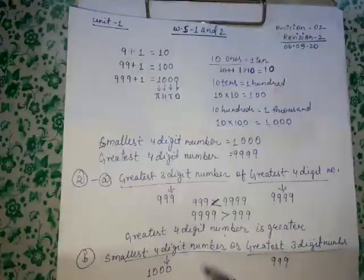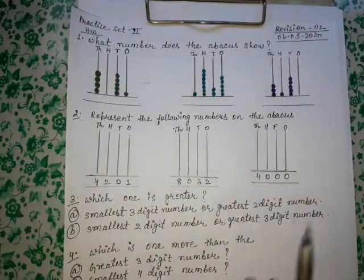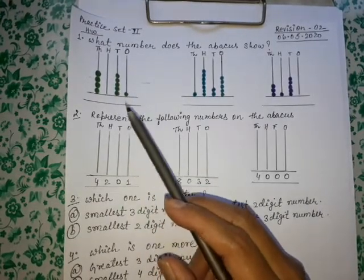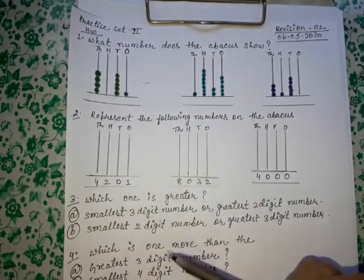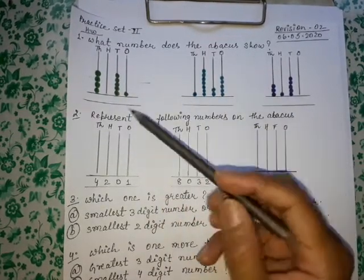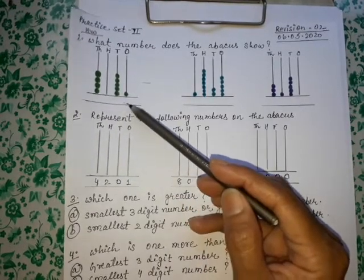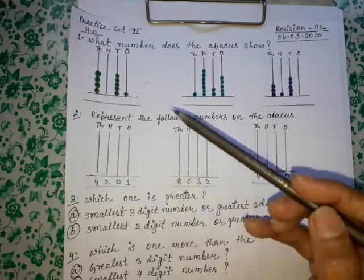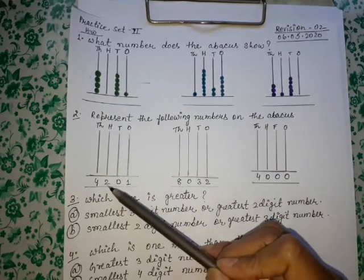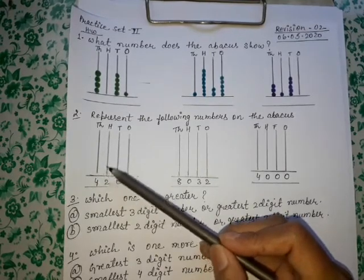After revising worksheet 1 and worksheet 2 of unit 1, you have to solve the practice set. In question 1, count the circles on the abacus and write the numbers, just as we learned in worksheet 1. In question 2, represent the given numbers on the abacus using circles.